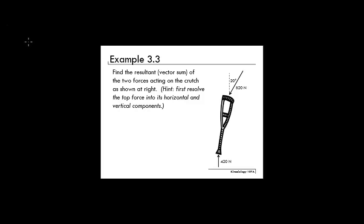For this example, we have two forces acting on a crutch. One in the upward direction at 420 newtons, and the other one downward and to the left at 820 newtons — this one is 20 degrees from the vertical. To find the vector sum, we add up all the forces, but because the 820 newton force is at an angle, we have to break it into its vertical and horizontal components.